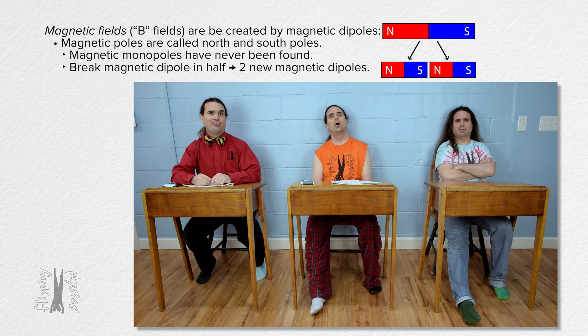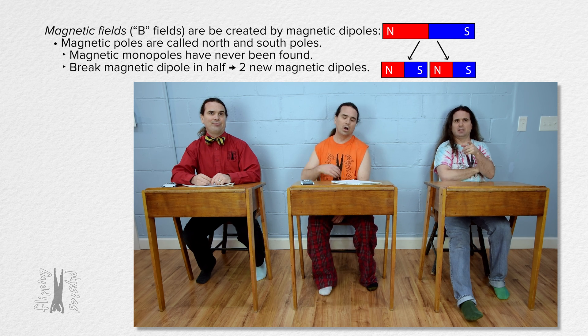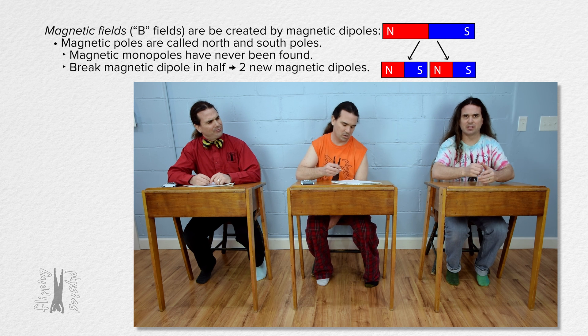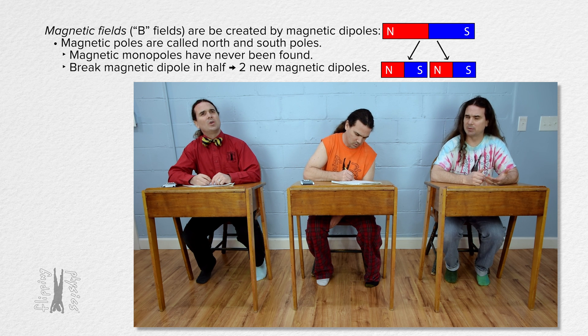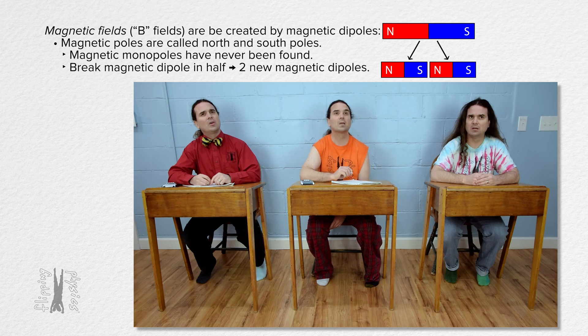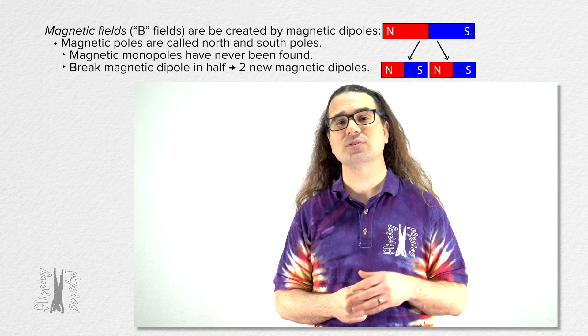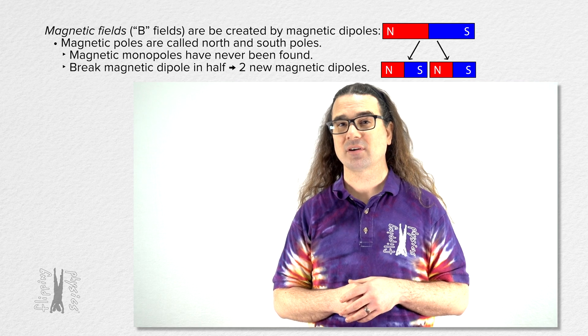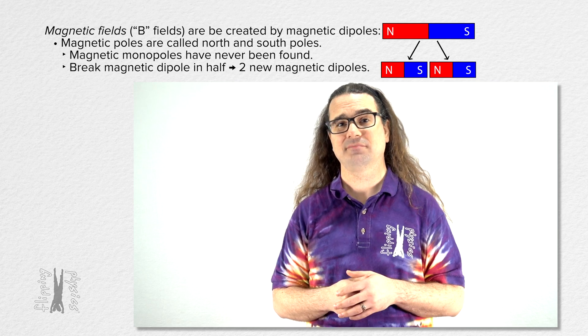Hold up. That is not quite what he said. He said magnetic monopoles have never been found. Right, Mr. P? Correct, Bo. We cannot prove that magnetic monopoles do not exist. However, we have no evidence that they do exist.